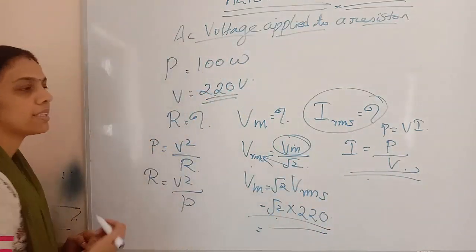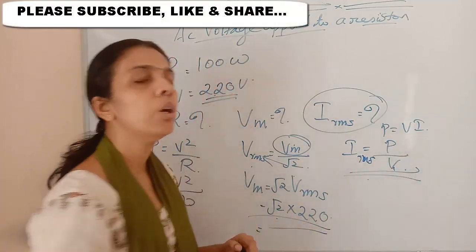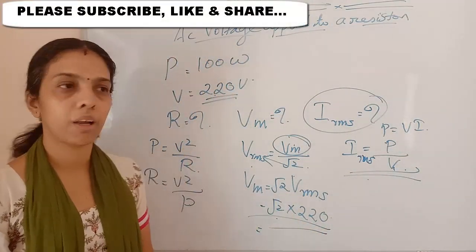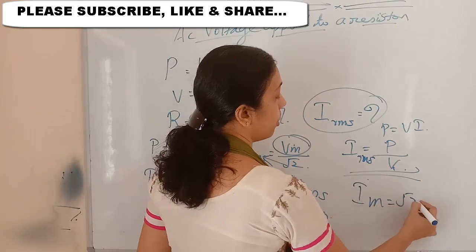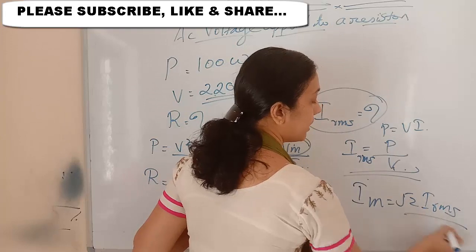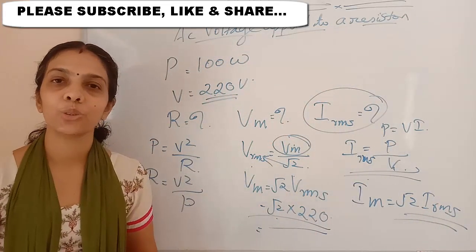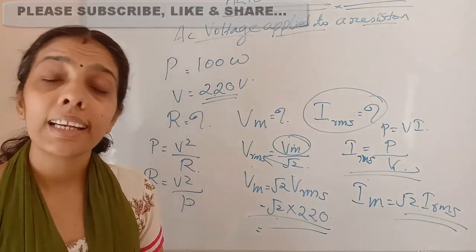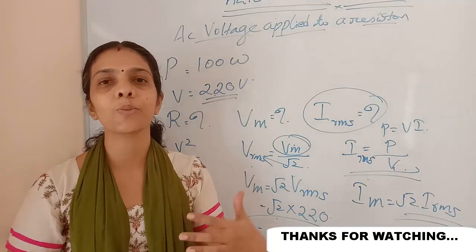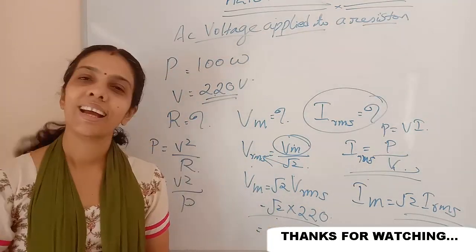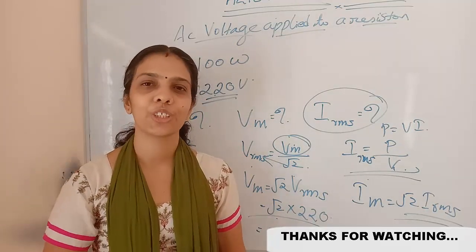So for V_rms and I_rms: if asked to find I_rms, use the normal formula; if asked for the maximum value, multiply the RMS value by √2. That's all for today. Next class we will start the inductor — what happens when an inductor is connected to an AC source. Please subscribe, like, and share. Thank you for watching!